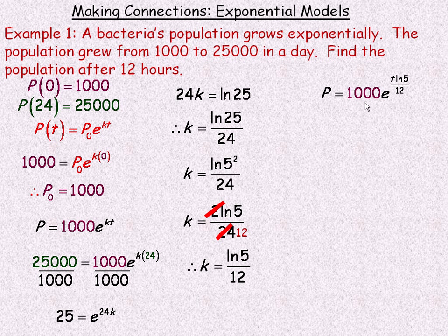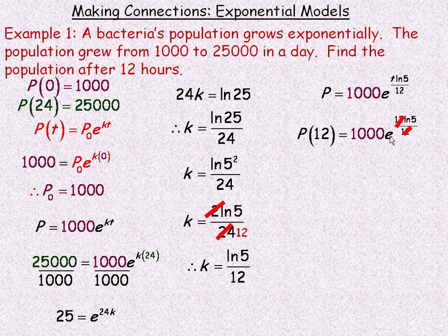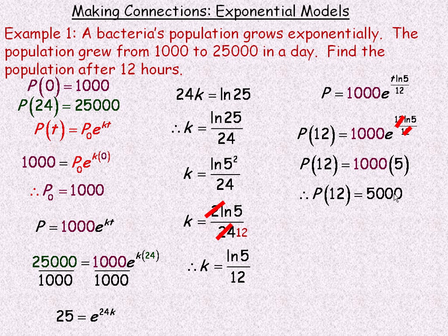We're asked to find the population after 12 hours, so we substitute t = 12. The 12s cancel, leaving e^(ln 5). Since the base of this logarithm is e — the same as the base of the exponent — e^(ln 5) = 5. So the population is 1,000 × 5 = 5,000. Halfway through the day, at 12 hours, the population is 5,000.